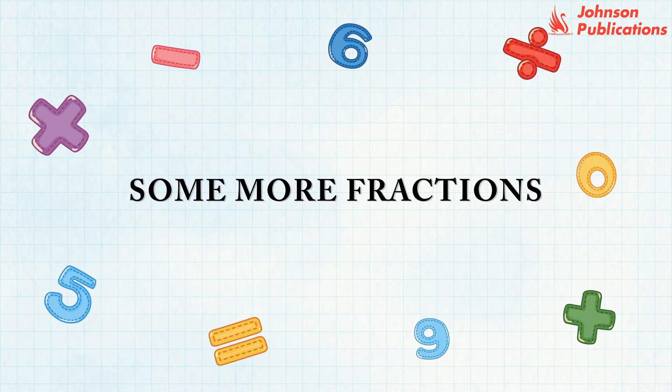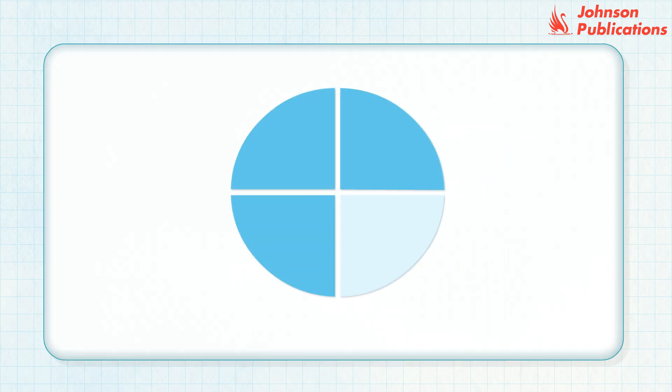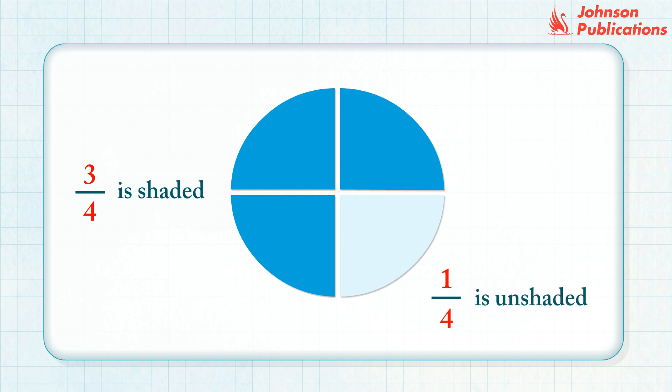Some more fractions. Shalini draws a circle with four equal parts and shades three parts. The fraction is written like this and read as three fourths. The remaining part of that circle is one fourth of the whole circle. Let us look at some more parts of the shape and their shaded portions.